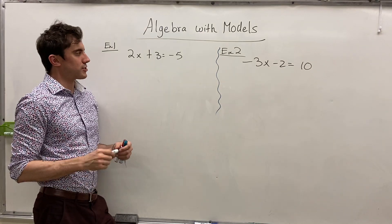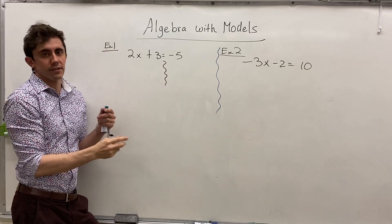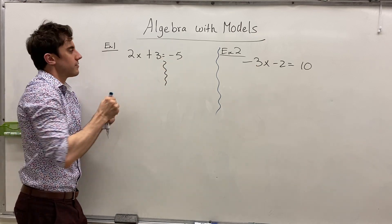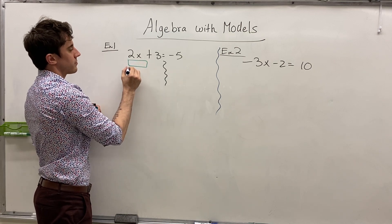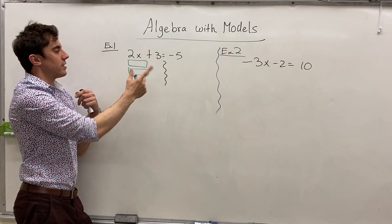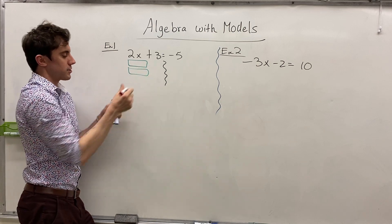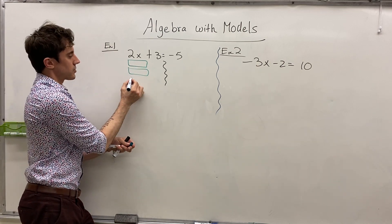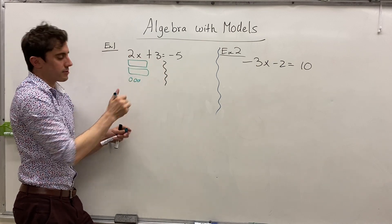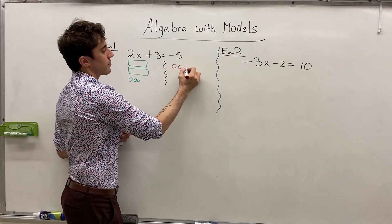For example, when we have 2x plus 3 is equal to negative 5, I'm going to start by making a nice clear division between the two sides of the equal sign. On the first side, we have 2x plus 3. For the two x's, I'll use two green rectangles — green representing positive units and red representing negative units — and three circles for the three units. On the other side, we have negative 5, so that means five red circles.